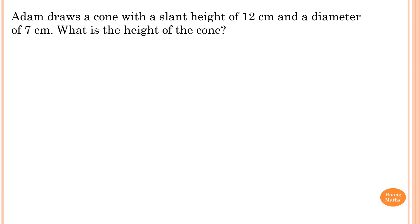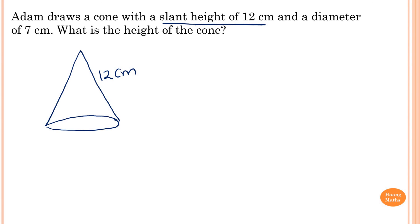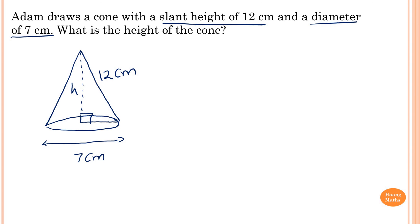We have a cone with a slant height of 12 centimeters and a diameter of 7 centimeters. The diameter from side to side is 7 centimeters. We are asked for the perpendicular height of the cone, labelled H. There is a right-angle triangle inside the cone. Since the diameter is 7, the radius is half of 7, which equals 3.5 centimeters. The slant height of 12 is opposite the right angle, so it is the longest side.